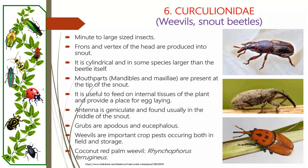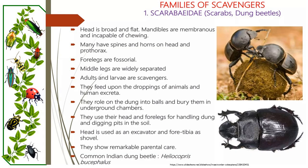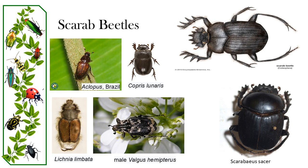The Curculionidae family is one of the largest groups of beetles with over 60,000 described species. Weevils are known for their elongated snouts and are often associated with plant species where they feed on leaves, stems or seeds. Scarabidae, or scarab beetles, includes many beetles such as the dung beetle, rhinoceros beetle and chafers. Scarab beetles play a vital role in decomposition, nutrient recycling and pollination. Some species are also of cultural and symbolic significance in other parts of the world.